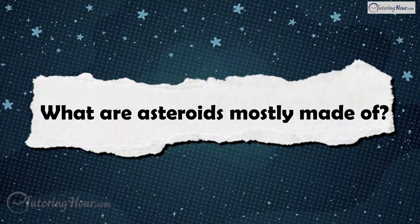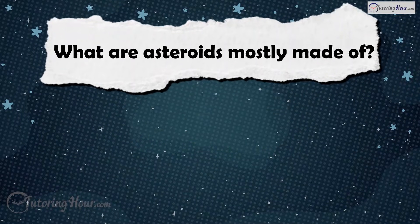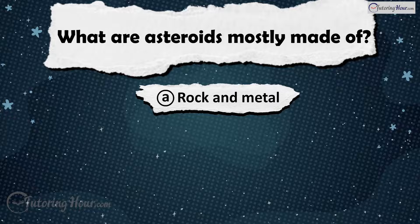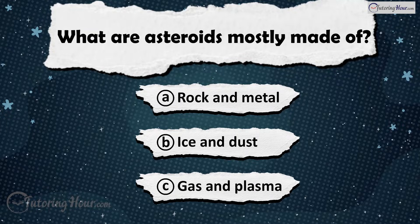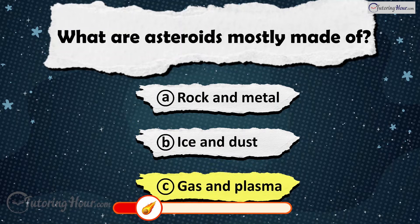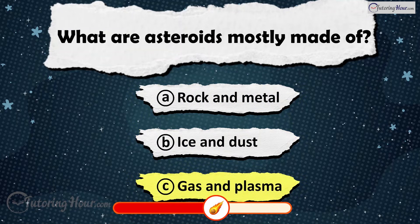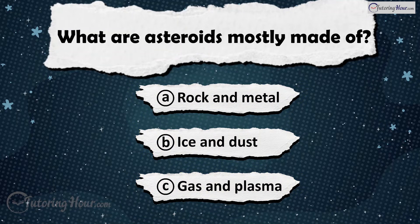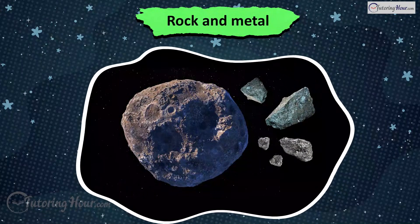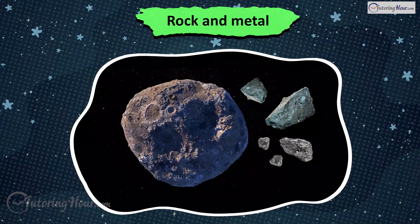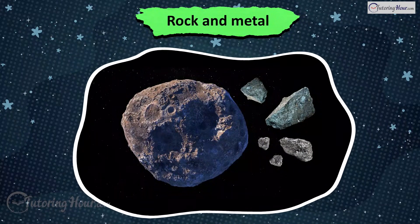What are asteroids mostly made of? Is it A) Rock and Metal, B) Ice and Dust, or C) Gas and Plasma? The answer is Rock and Metal. Asteroids are composed mainly of rocky material and metals like iron and nickel.